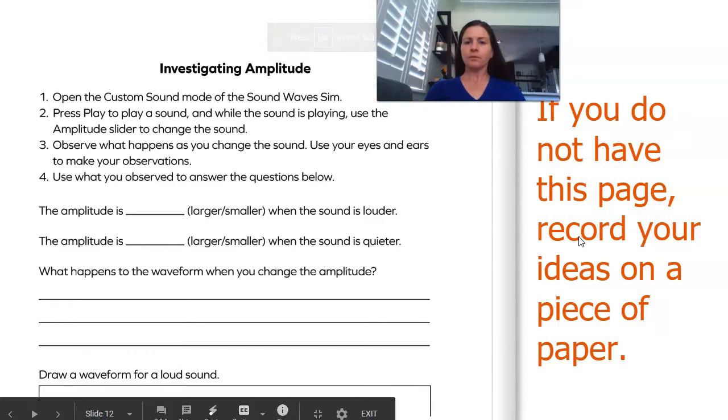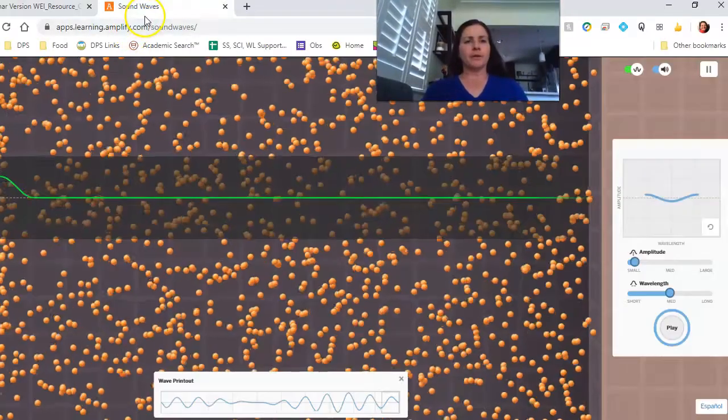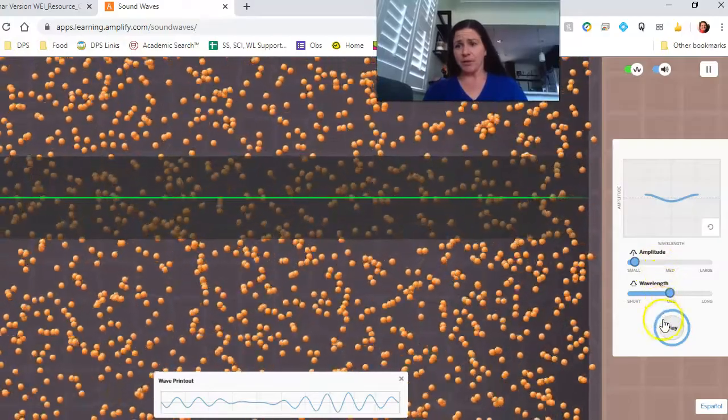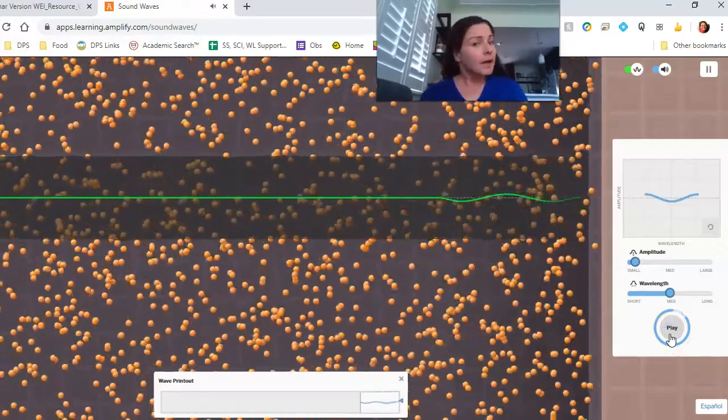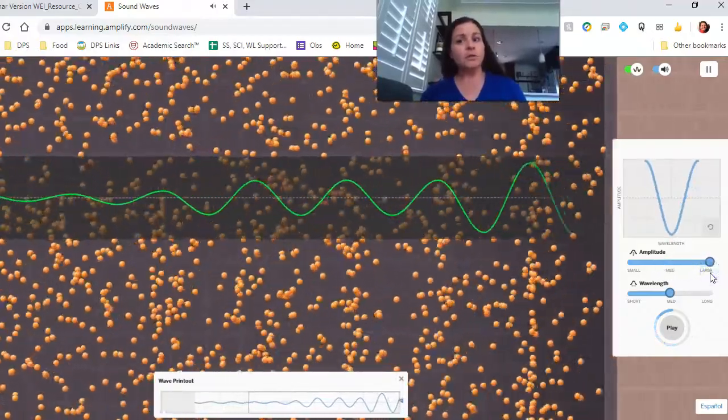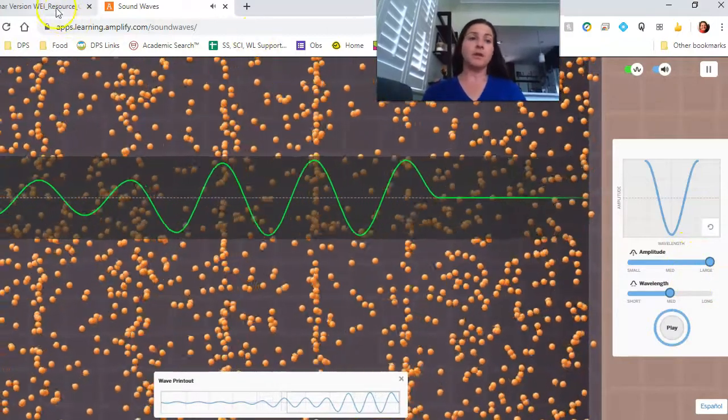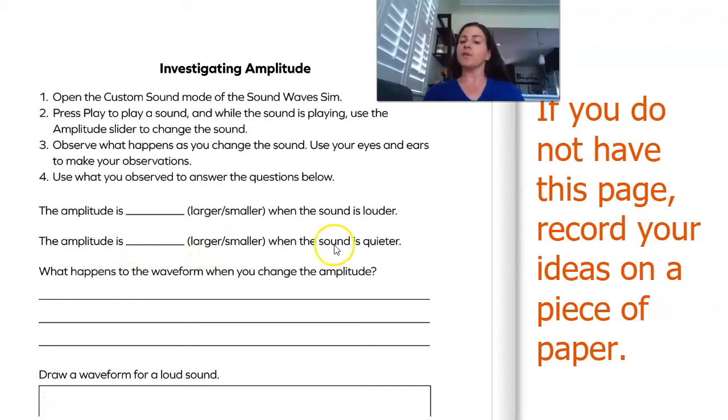Let's go back to this. So the amplitude is larger or smaller when the sound is louder. And then the amplitude is larger or smaller when the sound is quieter. Well, we actually saw that pretty clearly. Like right now, I've got the amplitude set is really small. I can barely hear that. Medium, louder, large. It's very loud. So to me, I see the amplitude is larger when the sound is louder. The amplitude is smaller when the sound is quieter.